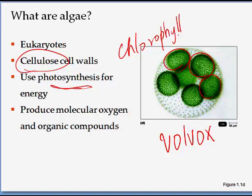If you study the oceans and look at the depth at which algae are found, it is amazing how deep they can be found. Algae were the precursor cells that eventually changed the conditions of the earth from high methane and no oxygen to the low and then high oxygen conditions that we find today.